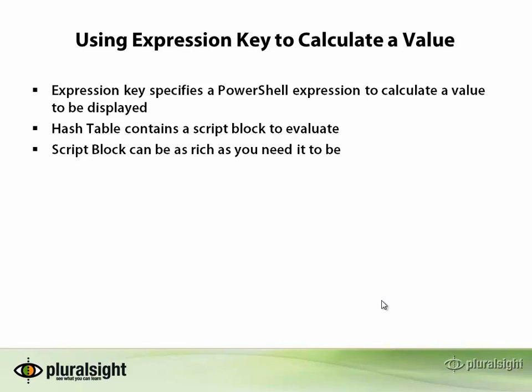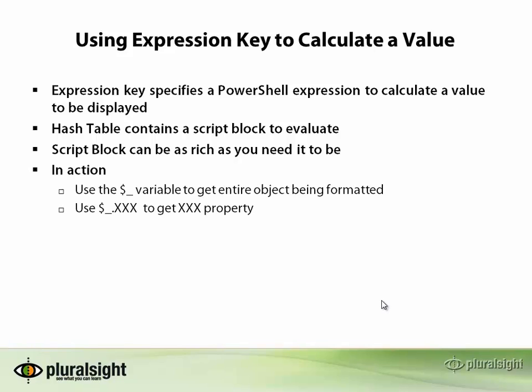That script block can be as much as you need it to be. In the previous example, we saw a very simple hash table with a very simple expression that just pulled a value out of the object and, in effect, gave it a different heading. In action, you can use the $_ variable to get the entire object being formatted and, of course, $_.xxx to get the property. We saw that by $_.cpu to get the CPU, and we then gave it a different heading.